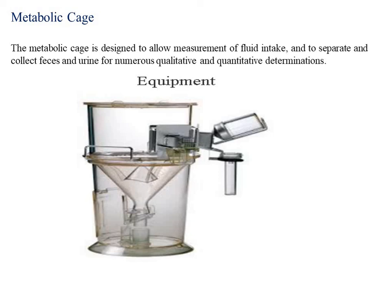Moving to the instruments and equipment: we will use the metabolic cage. This is a simple instrument — we can see it has a mesh-like structure where we place the rat. Whatever urinary volume is excreted by the rat is collected in a beaker. We then transfer the beaker contents into a volumetric tube to measure the exact volume of urine. The metabolic cage can also be used for measurement of feces and urine in numerous qualitative and quantitative determinations.